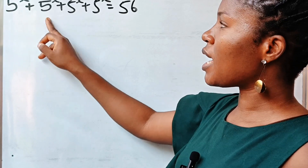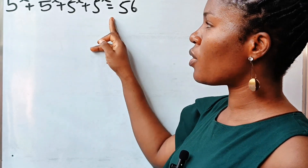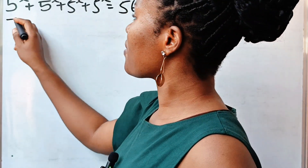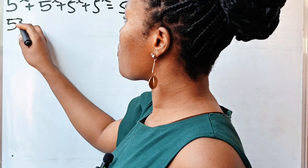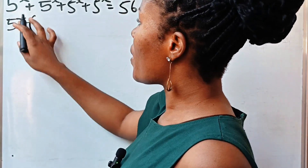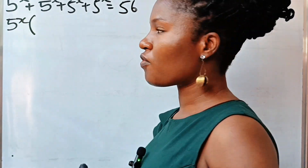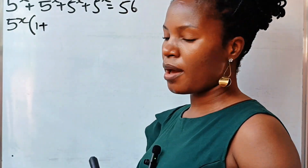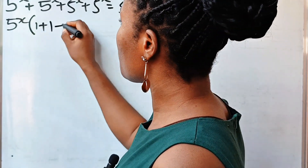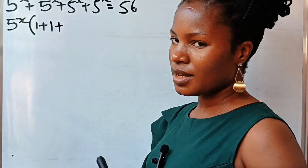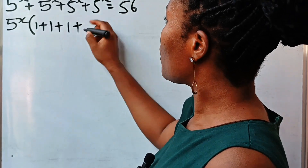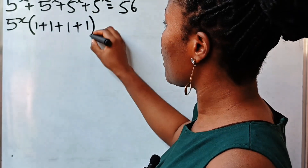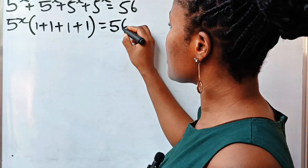First of all, what they have in common is 5 to the power of x. So we bring that out and write 5 to the power of x, open brackets. When this is divided by itself, we have 1. Plus, when this is divided by itself, we have 1 as well. When this is divided by this, we have another 1. When this is divided by this, we have another 1. Is equal to 56.